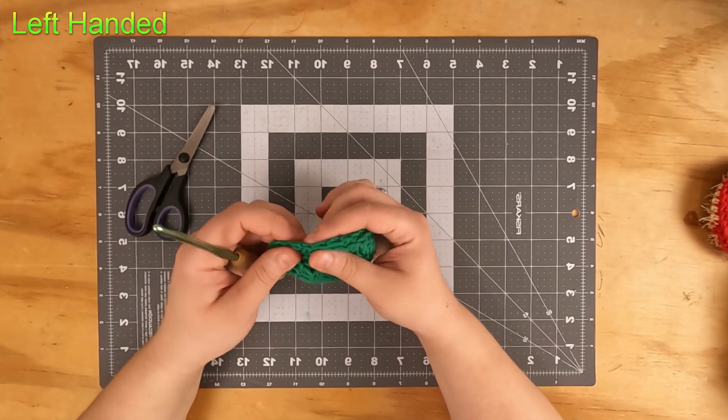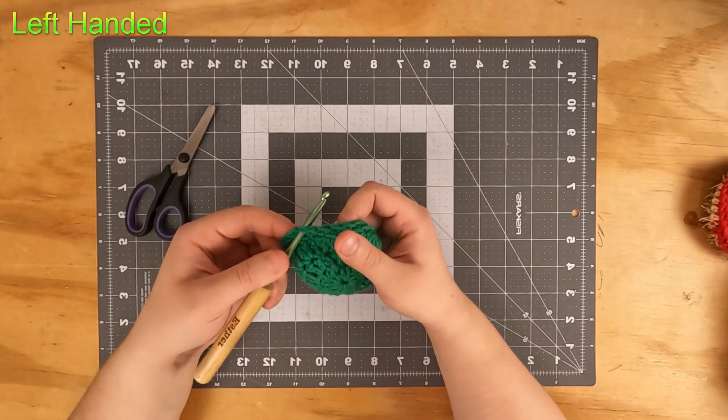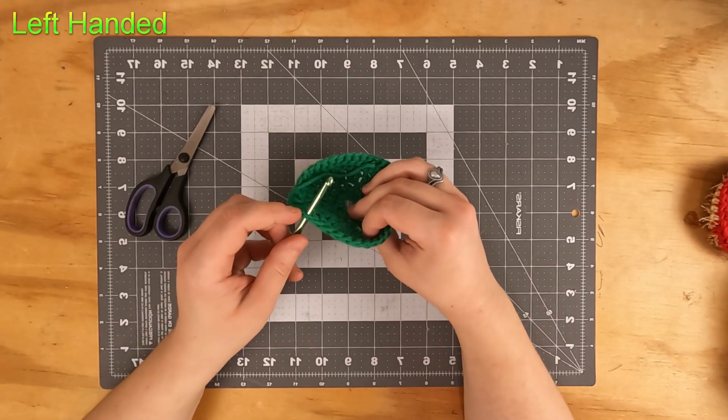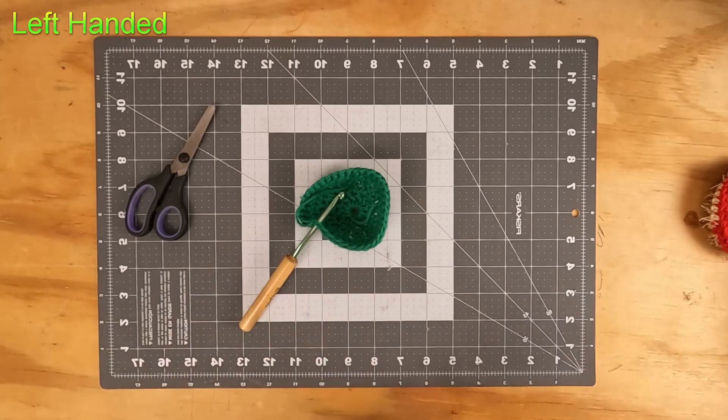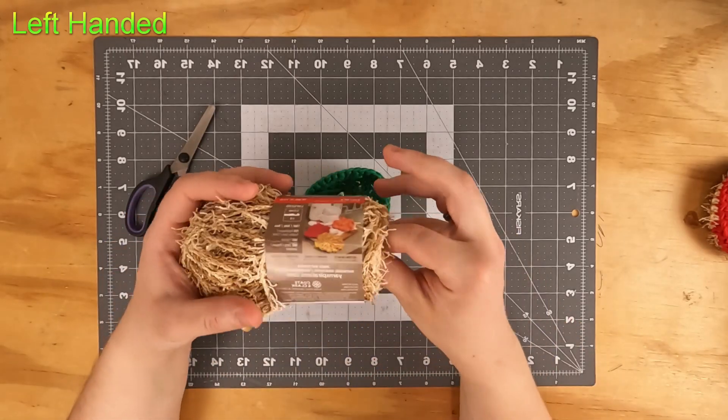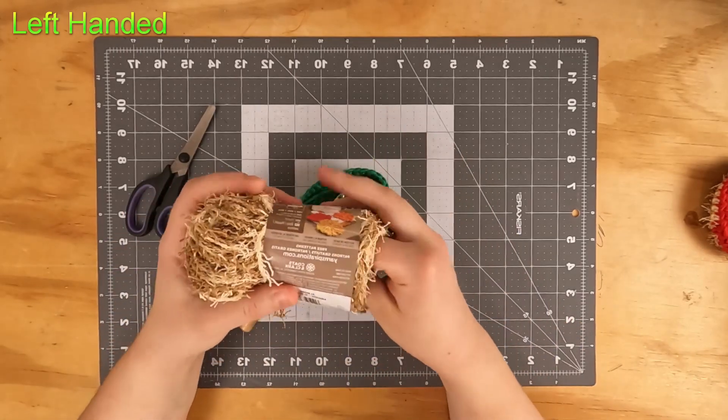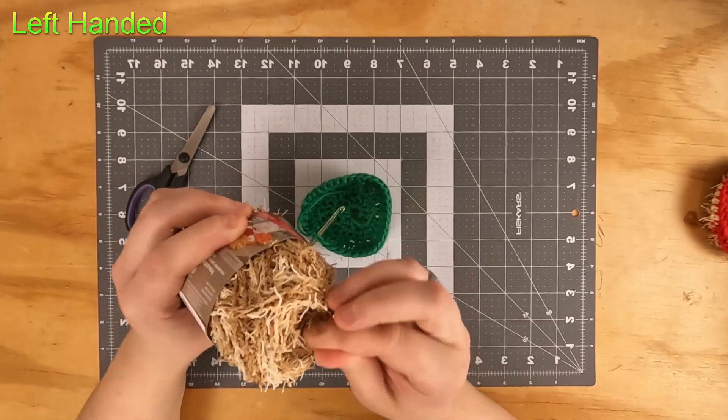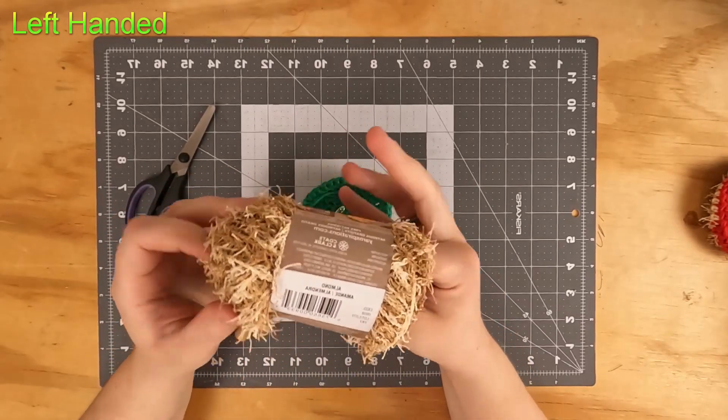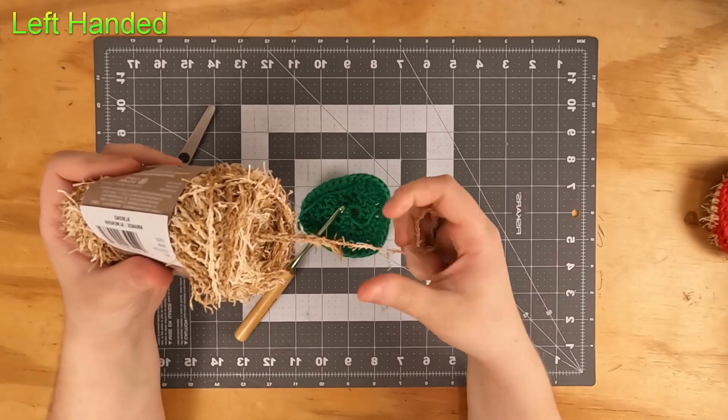Now to attach your scrubby yarn, go ahead and insert your hook into that first stitch after your slip stitch. This is the scrubby yarn I'm using today - it is the polyester kind.